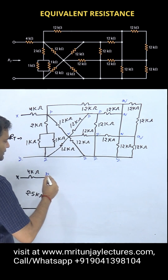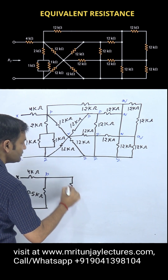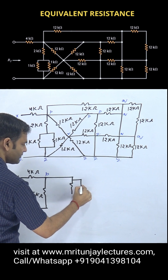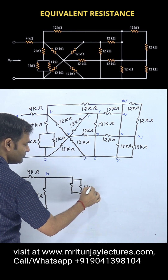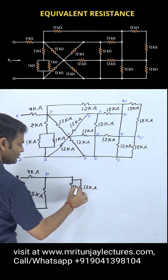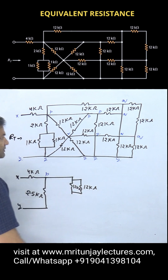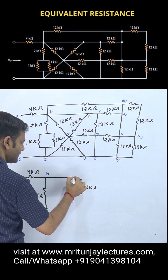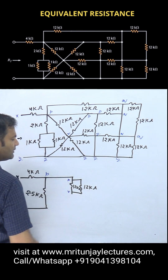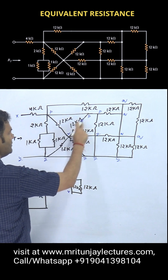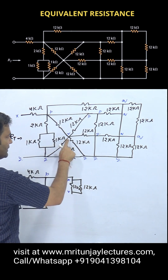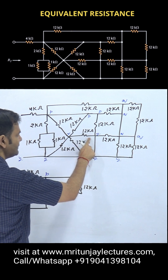First of all, redraw here. P to r: that is 12 kilo ohm and that is also 12 kilo ohm. P to r, p to r. After that, that is p here, r — so p to r, p to r. After that, r is connected to y, r connected to y, r connected to y.